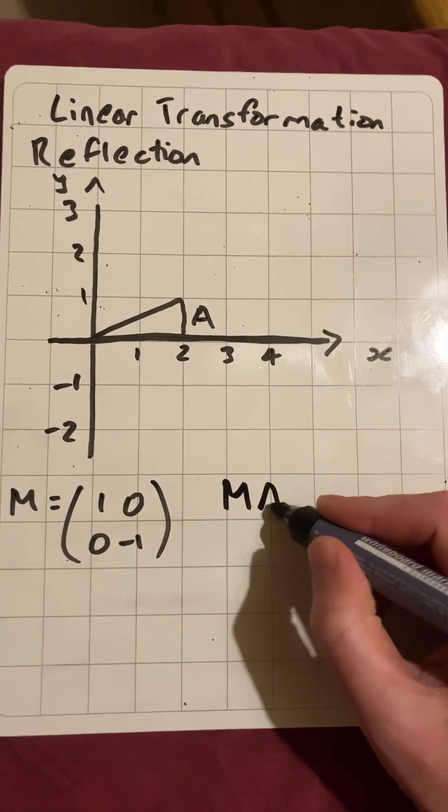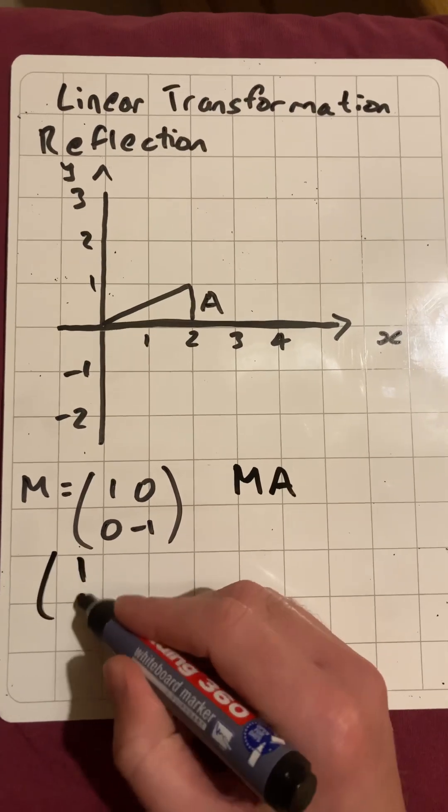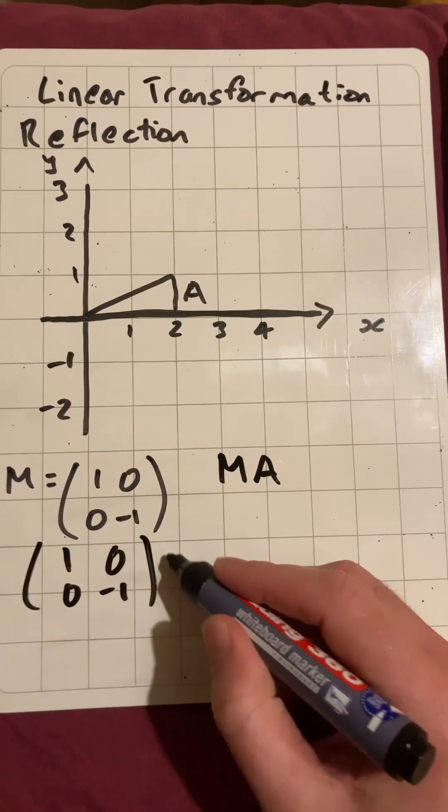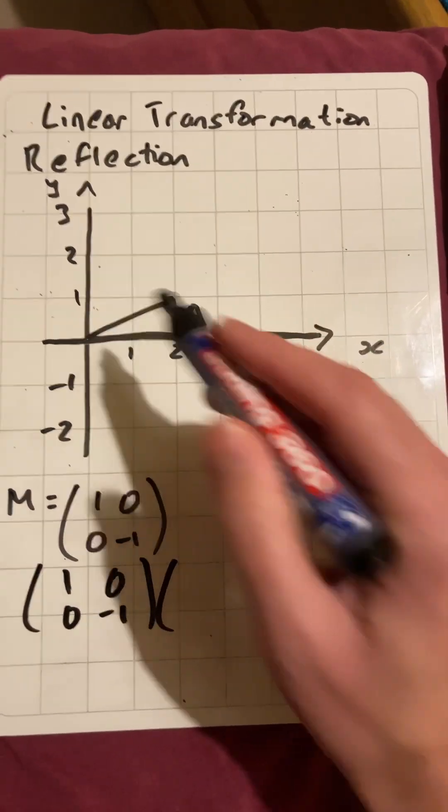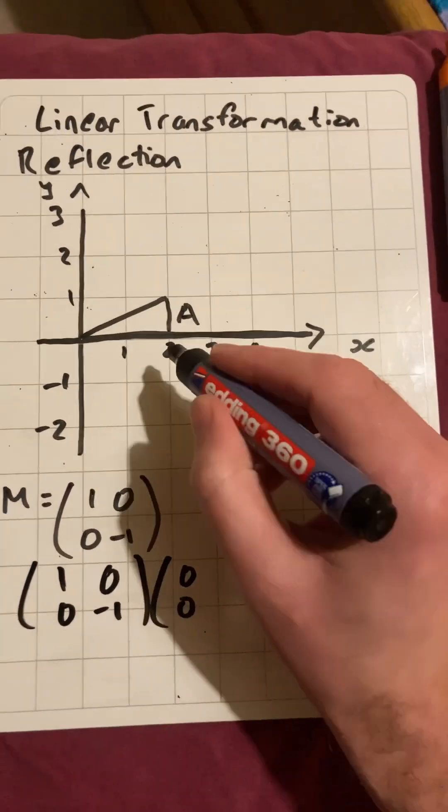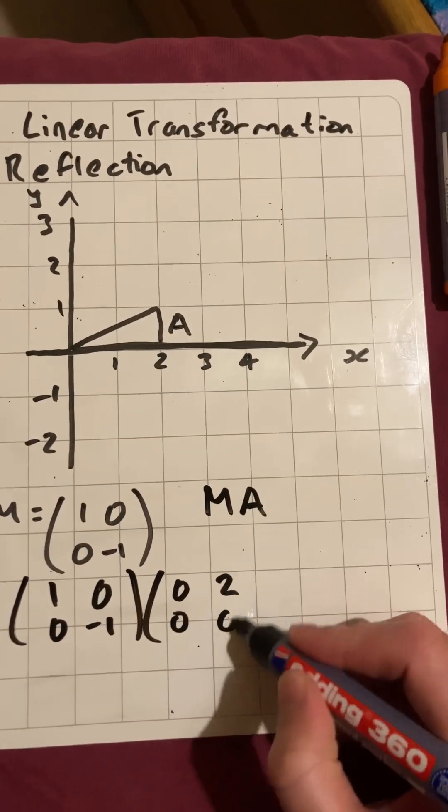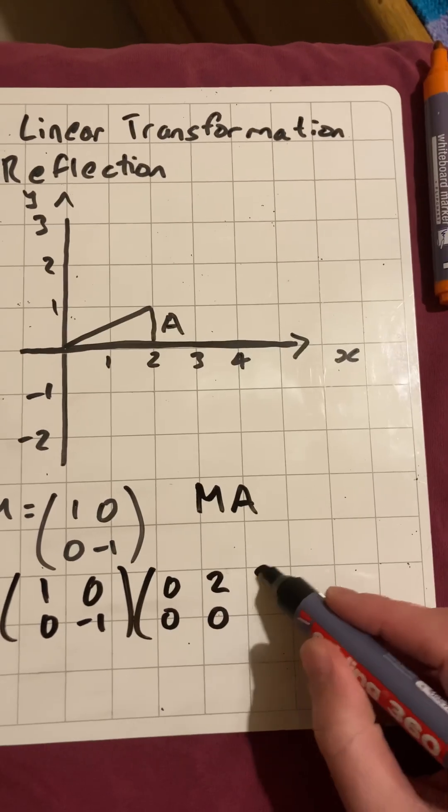So we'll have the matrix multiplication M, A, so 1, 0, 0, minus 1, on each of those points: 0, 0, 2, 0, and 2, 1.